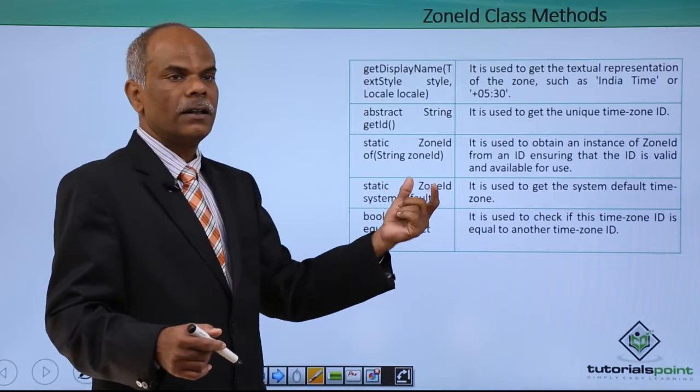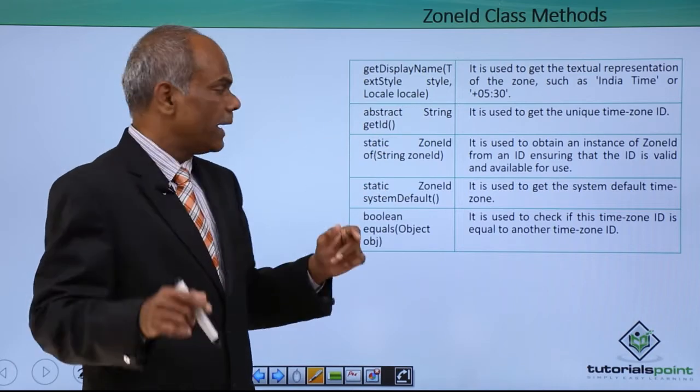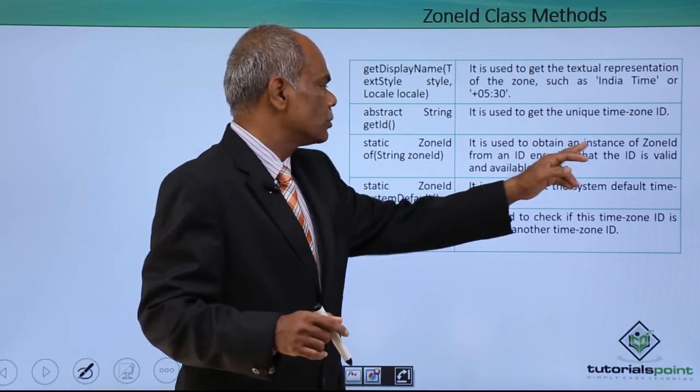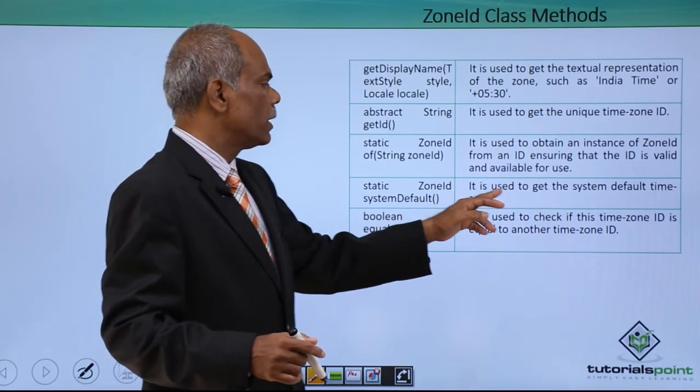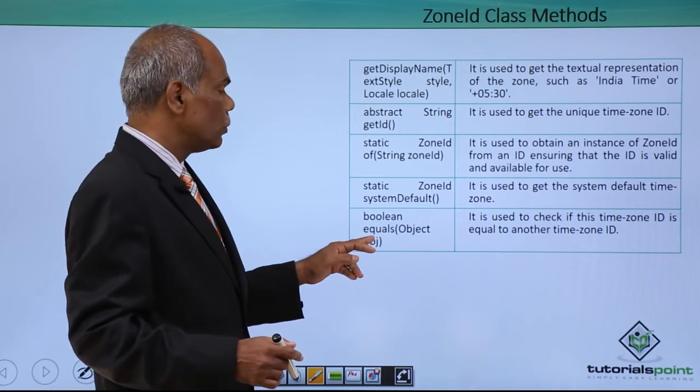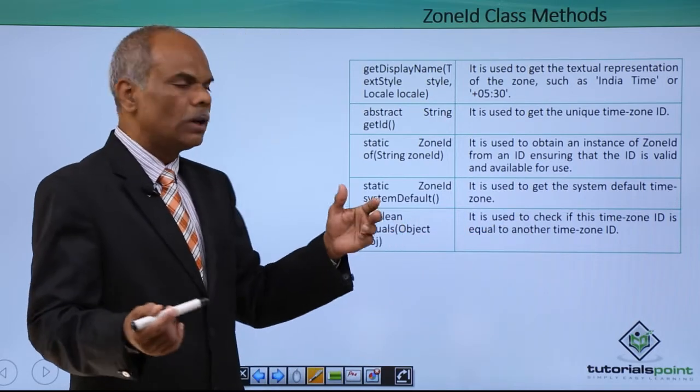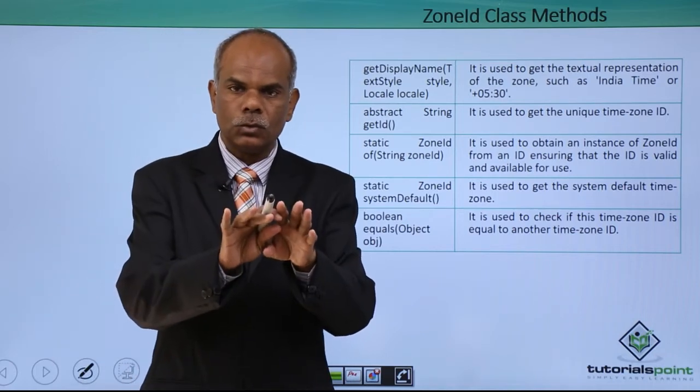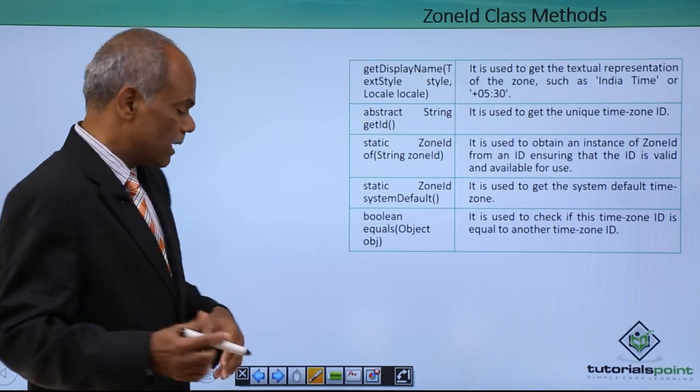ZoneID of a particular string zone ID, it is used to obtain an instance of ZoneID from the ID. System default will give you the system default time zone. Equals is used to check if the time zone ID is equal to another time zone to compare two IDs. These are the functions or methods available in the ZoneID class.